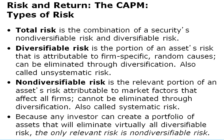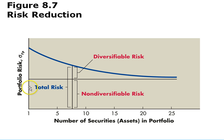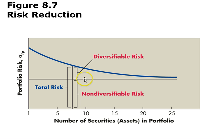Investors can easily create a portfolio that will eliminate virtually all diversifiable risk, so the only relevant risk to measure is non-diversifiable risk. With one stock, you have the total amount of risk — both non-diversifiable and diversifiable. As you add more stocks — four, five, ten — diversifiable risk goes down, while non-diversifiable risk stays pretty constant. If you get up to 25 stocks in your portfolio, you've eliminated most of the diversifiable risk and are only left with non-diversifiable risk.